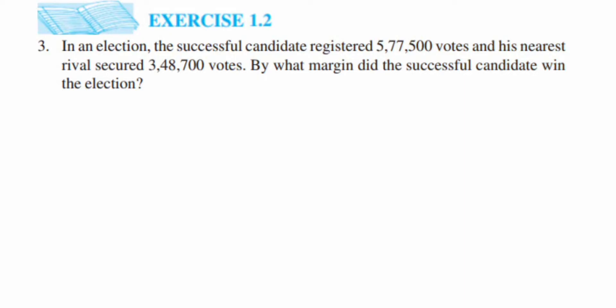Hey everyone, here is a question from Exercise 1.2, third question. This is the 'Knowing Our Numbers' chapter from Class 6. The question is: in an election, the successful candidate registered 5,77,500 votes and his nearest rival scored 3,48,700 votes.